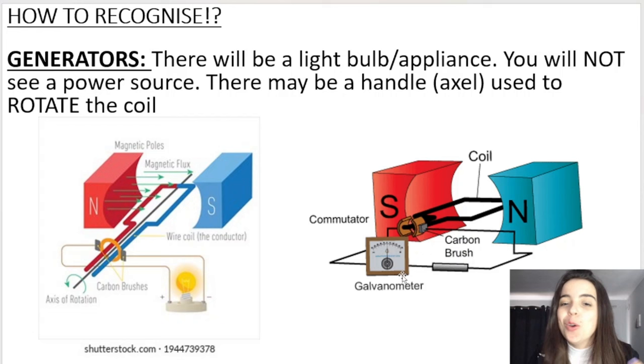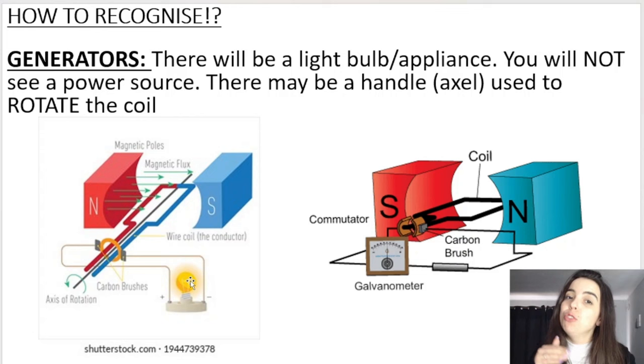This galvanometer measures or detects the induced EMF and therefore the induced current. You will see a light bulb attached because remember, we're converting mechanical energy into electrical energy. So diagrams often show a light bulb to illustrate that we have converted that spinning kinetic mechanical energy into electrical energy.